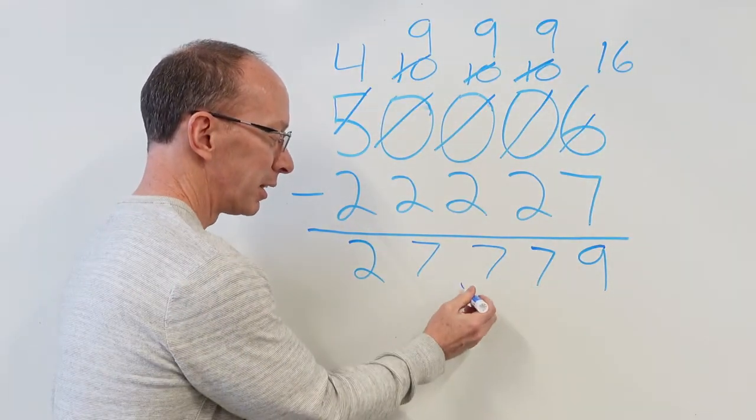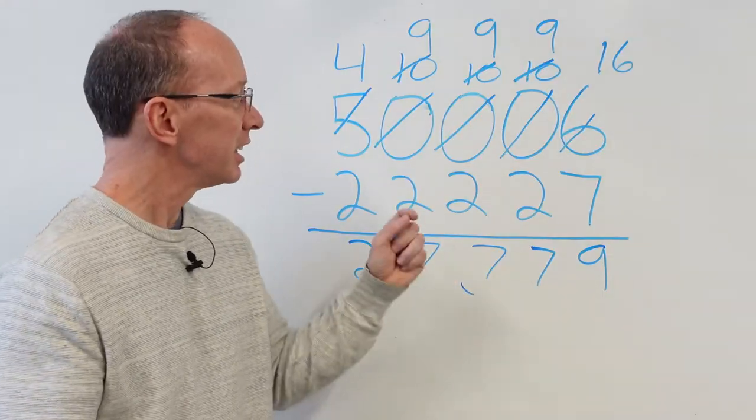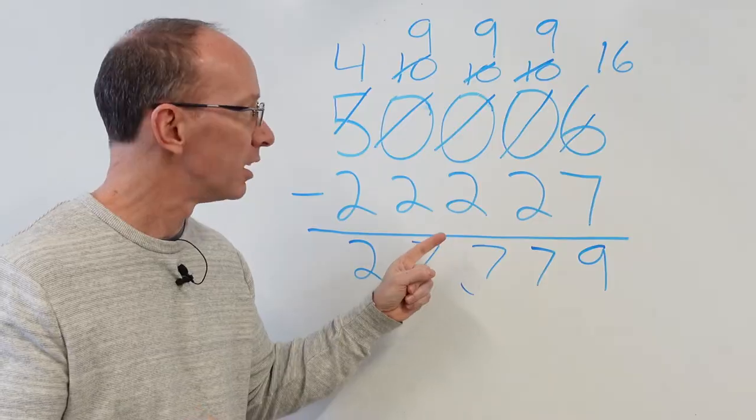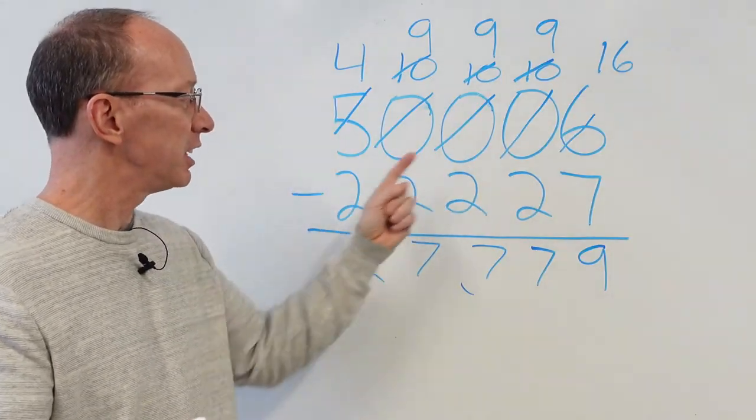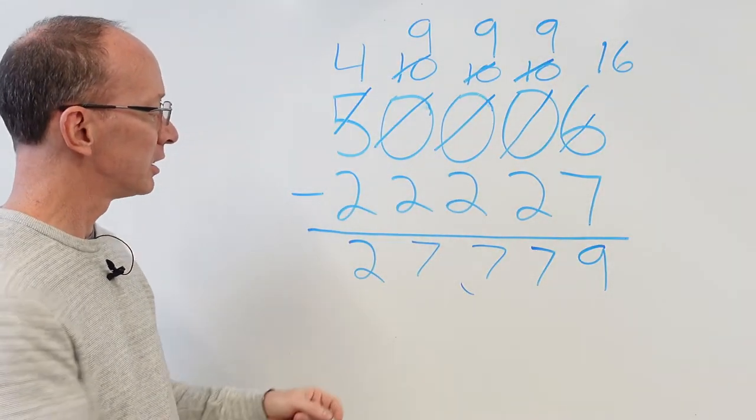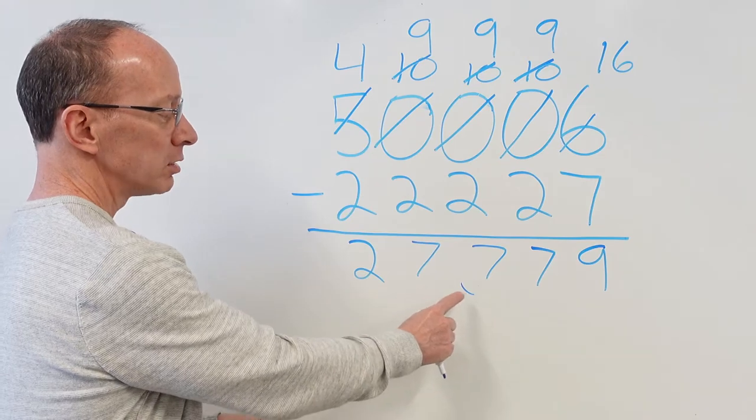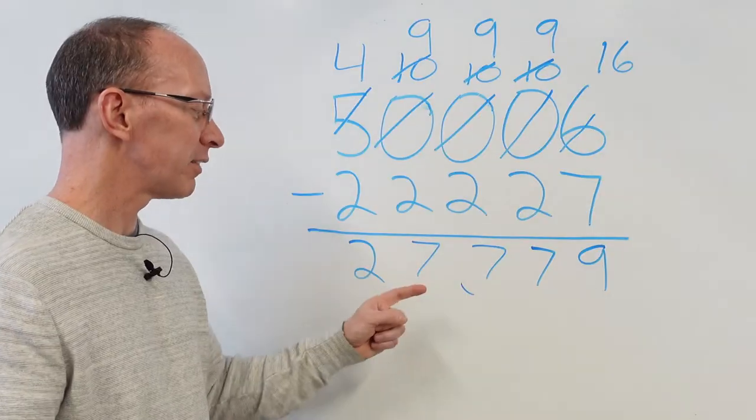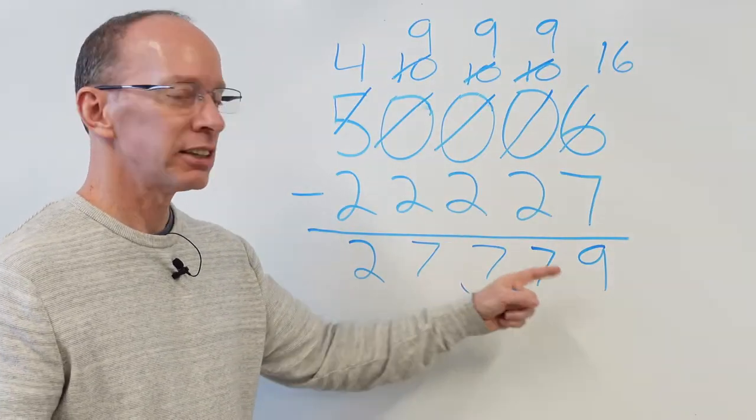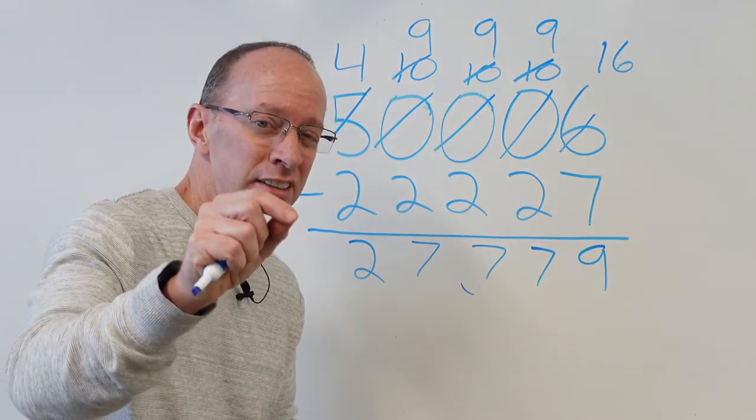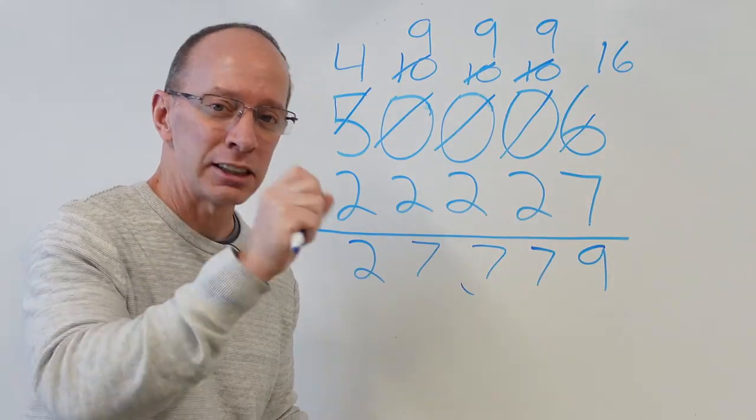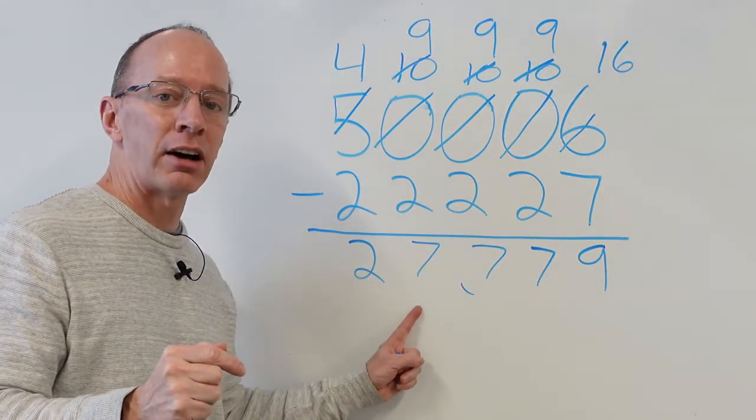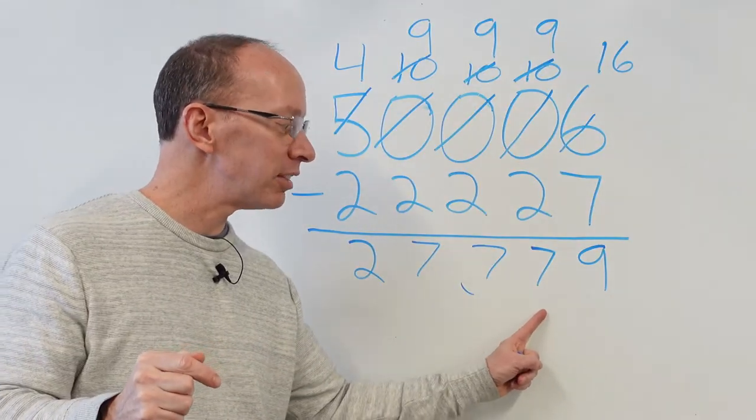And if you want to, you can put a little comma there after the third digit. This is how you do it. This is how you subtract when you've got a bunch of zeros here. We just subtracted a five-digit number, and our answer is 27,779. Don't put 'and.' Don't say 27,779 and, because that 'and' is sometimes represented as a decimal point. So get in the habit of just saying 27,779.